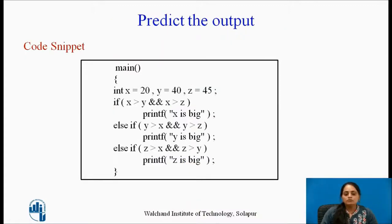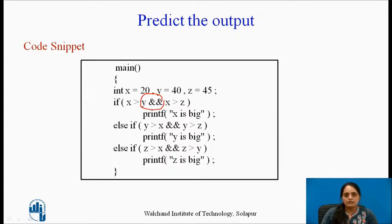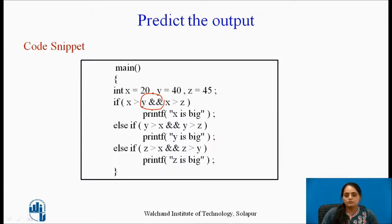Time to reflect. Look at the program given here carefully and try to find out the output. Pause the video for a moment and think about it. As you can see, two logical AND operators have been used. The else-if and else statements have been skipped, as else is optional. The logical AND operator checks that if both conditions are true, only then is the overall condition true and the corresponding if block executed.